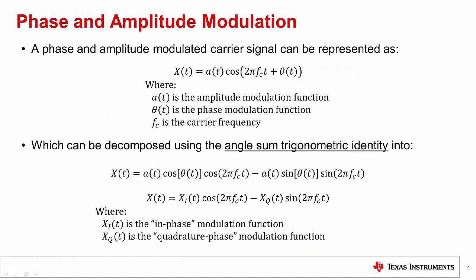Now, let's walk through the math behind basic phase and amplitude modulation. This is a good example since it is widely used, such as in quadrature amplitude modulation or QAM. This same basic analysis can be used for all of the modulation types given on the previous slide. It also allows us to demonstrate both real and complex modulation. A phase and amplitude modulated carrier can be represented where the cosine term serves as the carrier, which is modulated in amplitude by A(t) and in phase by θ(t).